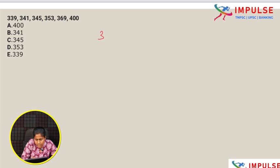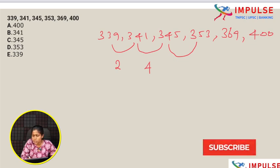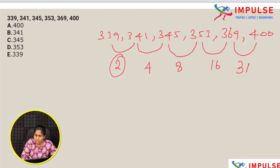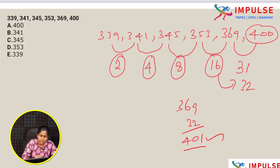Next question: 339, 341, 345, 353, 369, 400. Looking at the differences: 2, 4, 8, 16, 31. The differences should double — 2, 4, 8, 16, 32. So 369 plus 32 is 401, but the series shows 400. Therefore 400 is the wrong number. Option is 400.